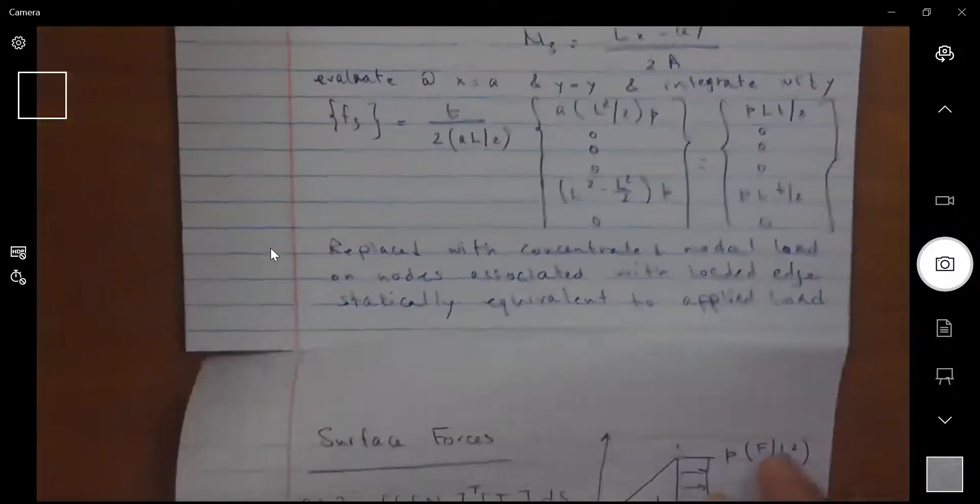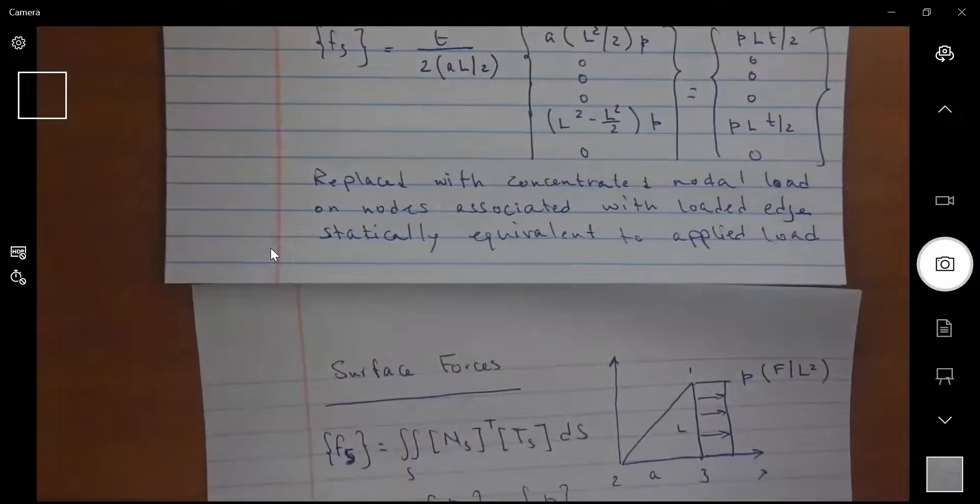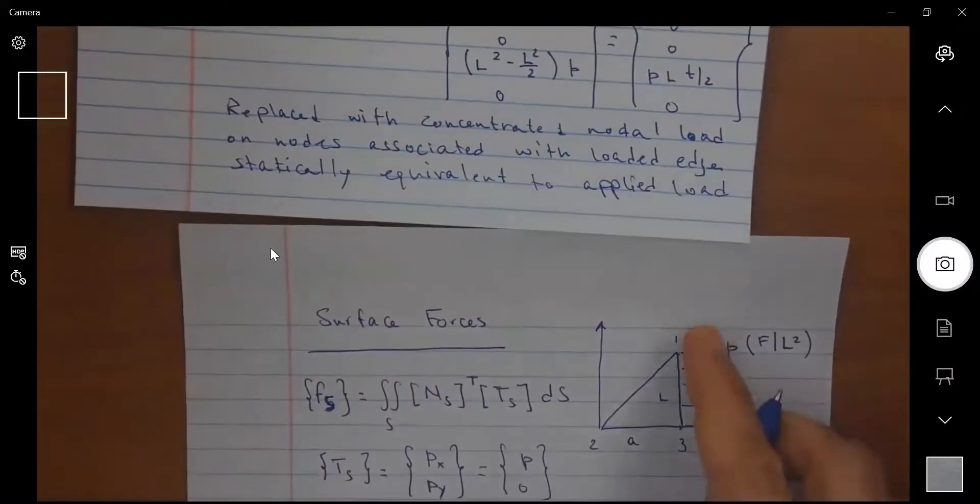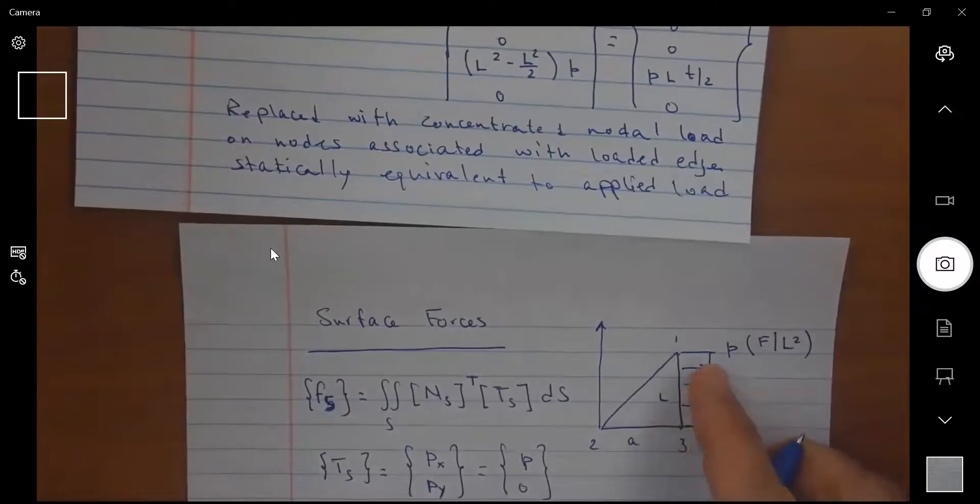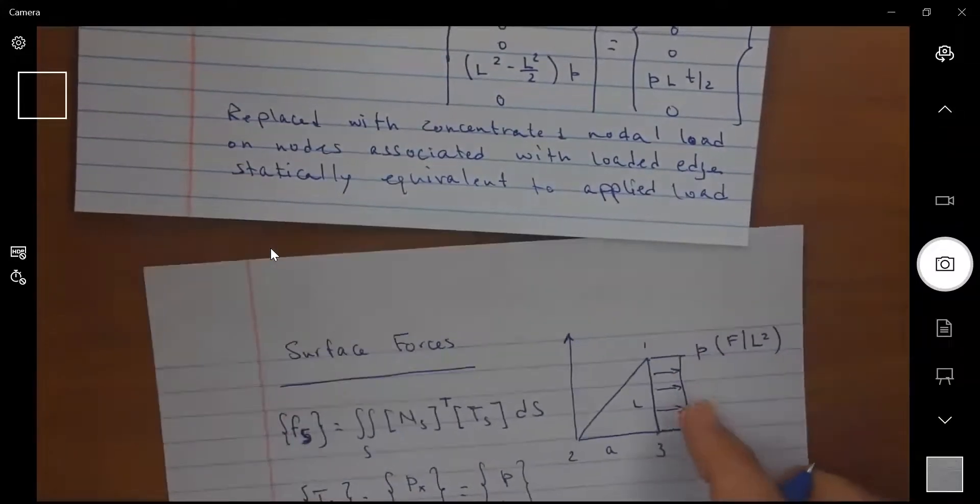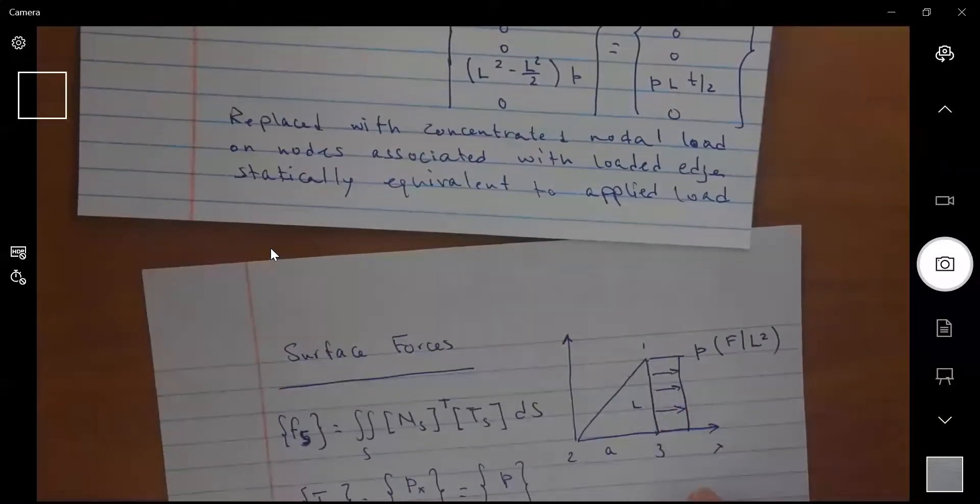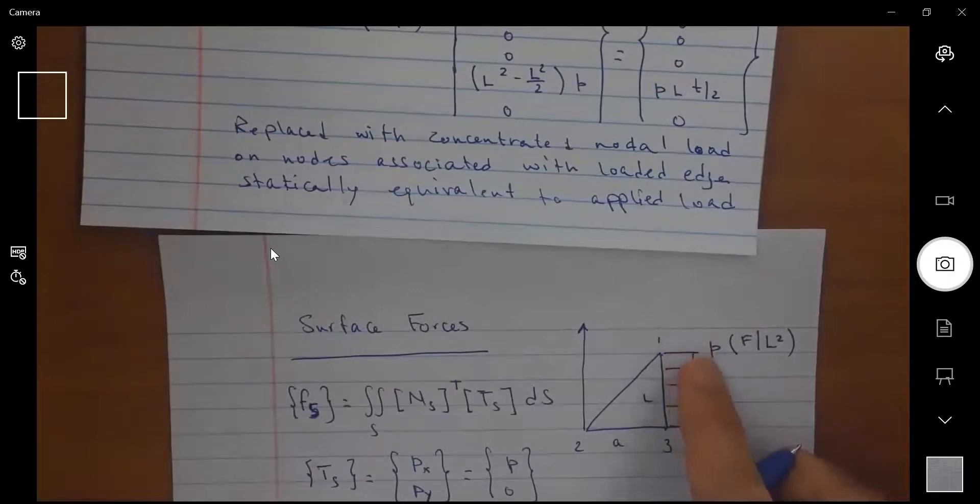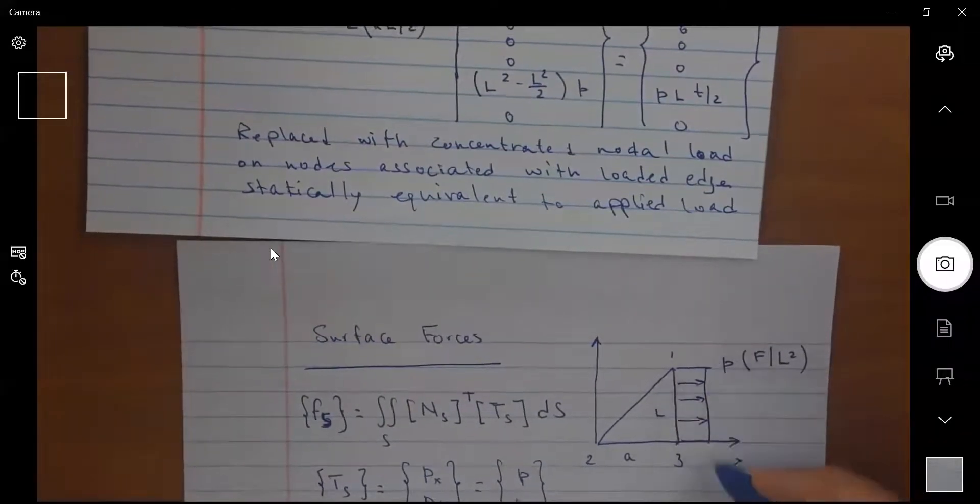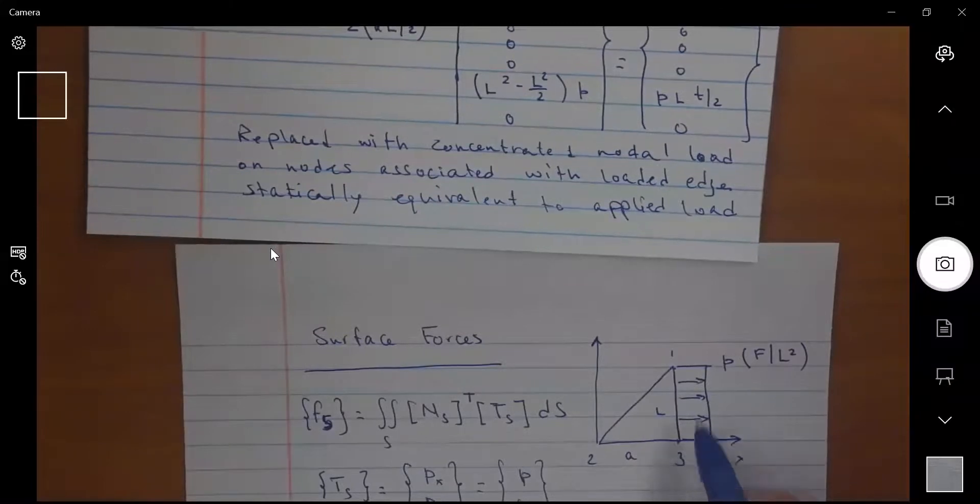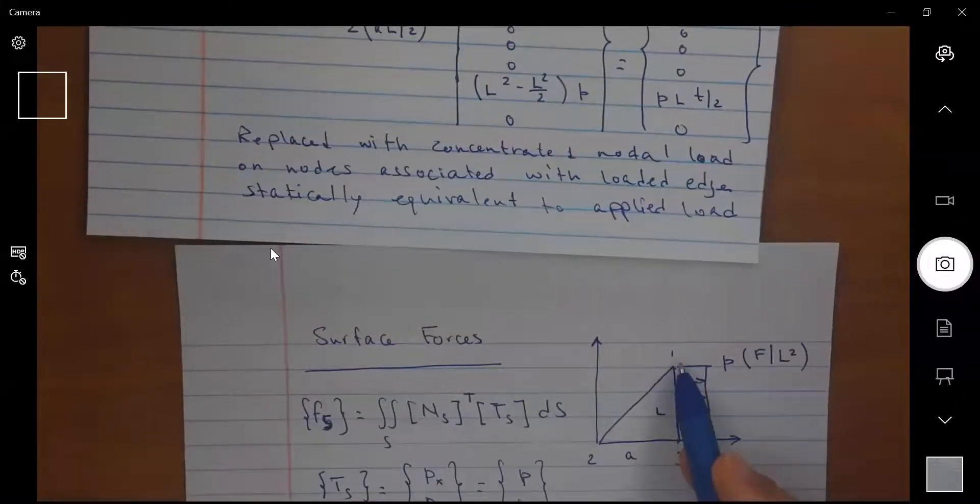If we are looking at the applied loads, the applied load is applied over a length L and the thickness T. So if I want to find the total load it is P L times T, that's the total load. And because it's uniformly distributed, half of it is going to node three and half of it is going to node one.